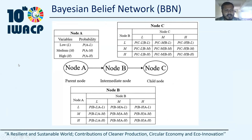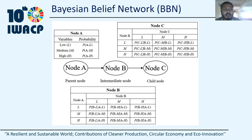We have used the Bayesian belief network, which is actually a belief network or Bayes network. It is a probabilistic graphical model which represents a set of variables and their conditional dependencies with the help of a directed acyclic graph. In the network, three types of nodes exist: prior, intermediate, and child nodes. Each node has various probability states. Node A represents the parent node, and nodes B and C represent intermediate and child nodes, which means B and C are dependent nodes and A is a non-dependent node. Node B and C will have conditional probability and node A will have prior probability. All nodes have three probability states: low, medium, and high. Node A has only three probabilities, and nodes B and C have conditional probabilities as they are conditioned with A.